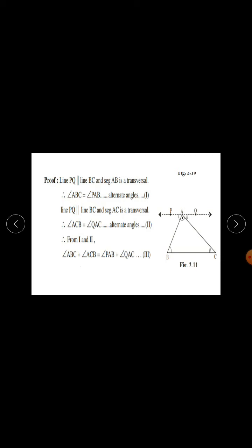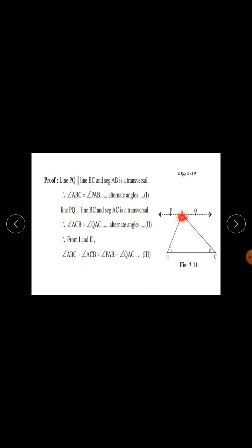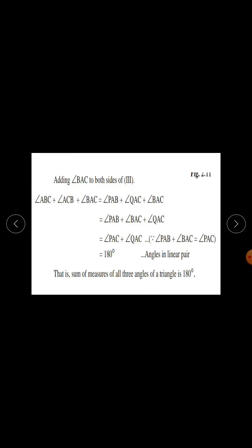So angle PAB + angle BAC = angle PAC. Therefore the right side becomes angle PAC + angle QAC. But angle PAC + angle QAC = 180 degrees, because they are angles in a linear pair. Therefore, the sum of measures of all three angles of a triangle is 180 degrees.